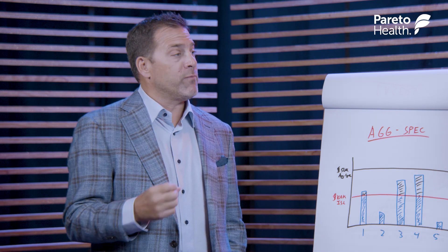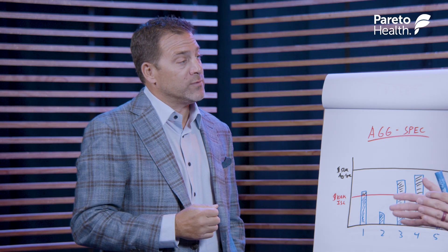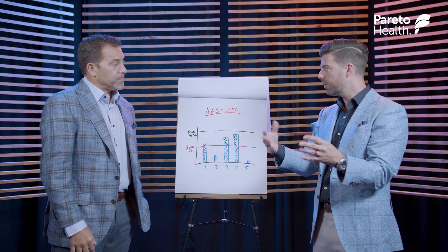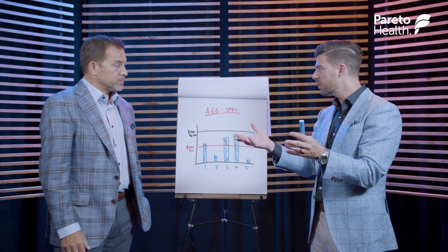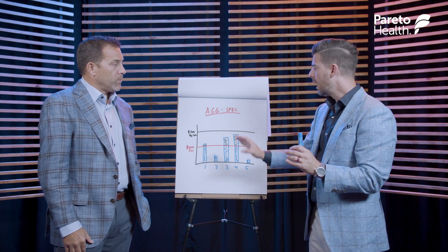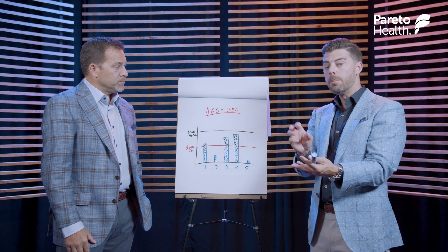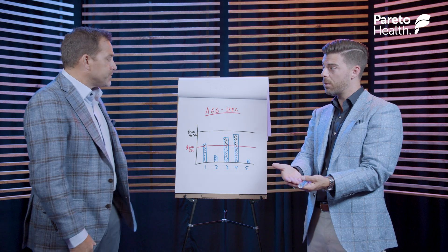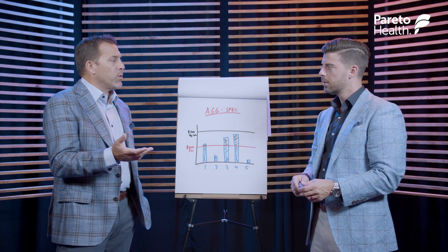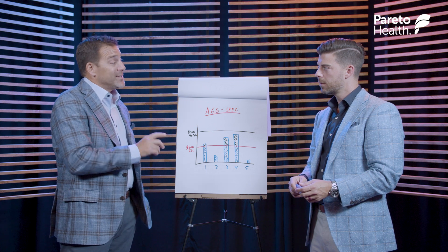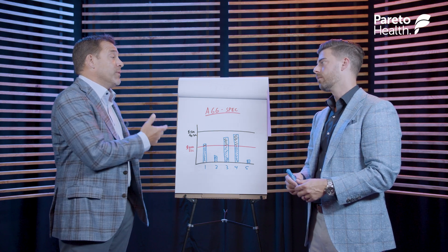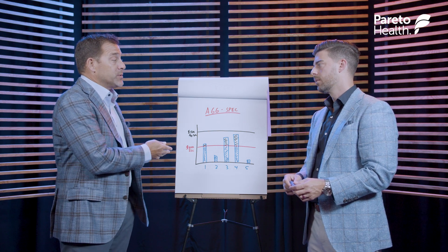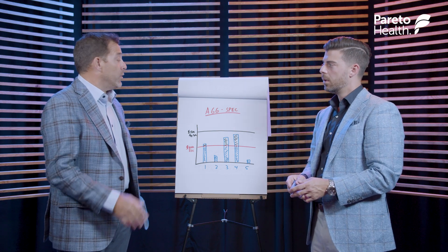If the reinsurance carrier doesn't specifically know who that person is and they can't assess a laser, they'll often employ that aggregating specific. They'll create that buffer of risk so before they start paying out claims. Effectively the stop-loss carrier says: I need you to take this. If we're going to write this case at this premium level without lasers, or perhaps in lieu of lasers, or I just can't quite figure out who the laser would be — I need you to take this ag spec. But they're not going to give you a premium credit in most circumstances for that.